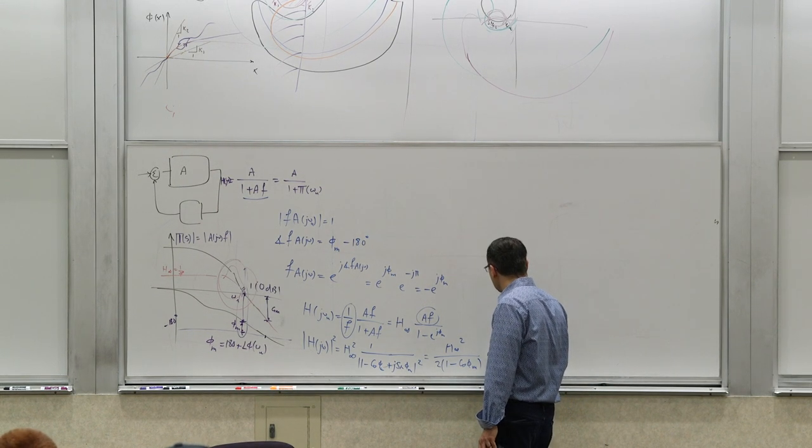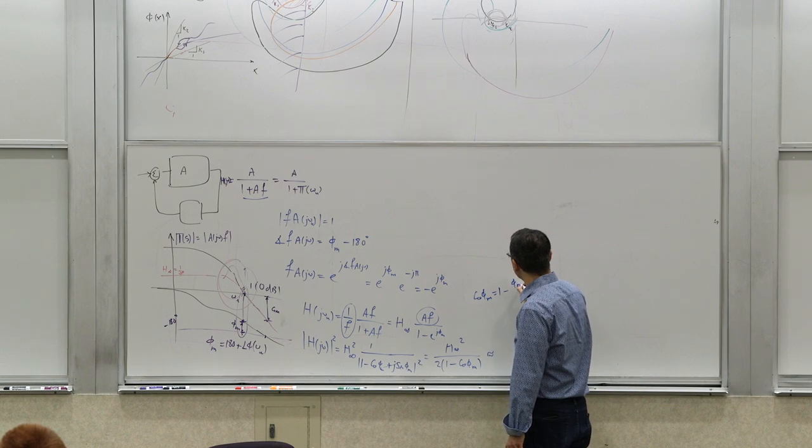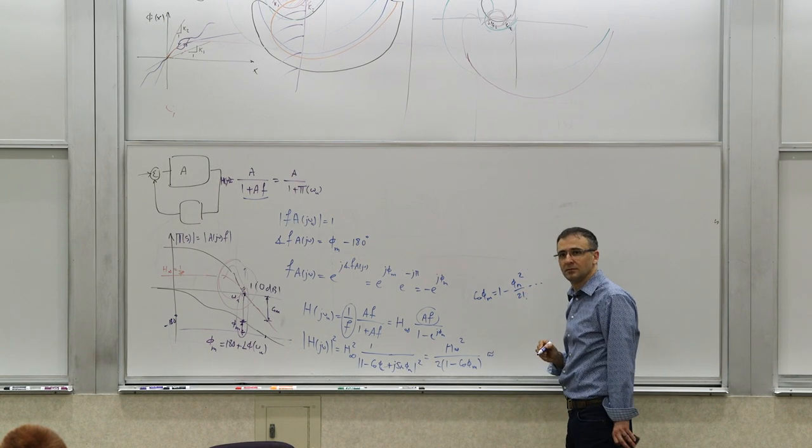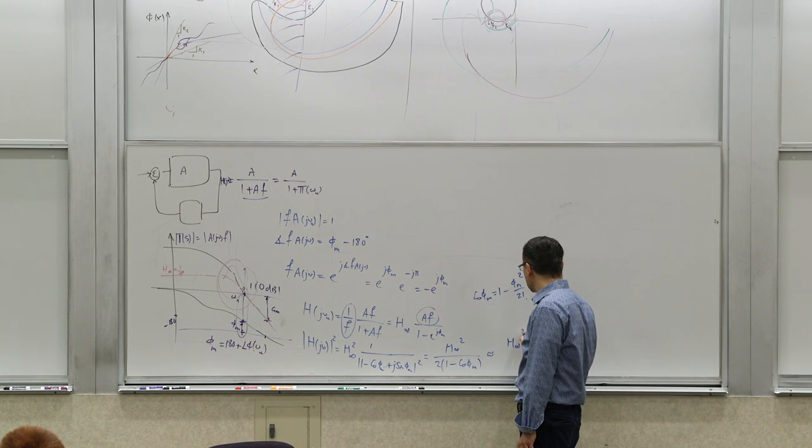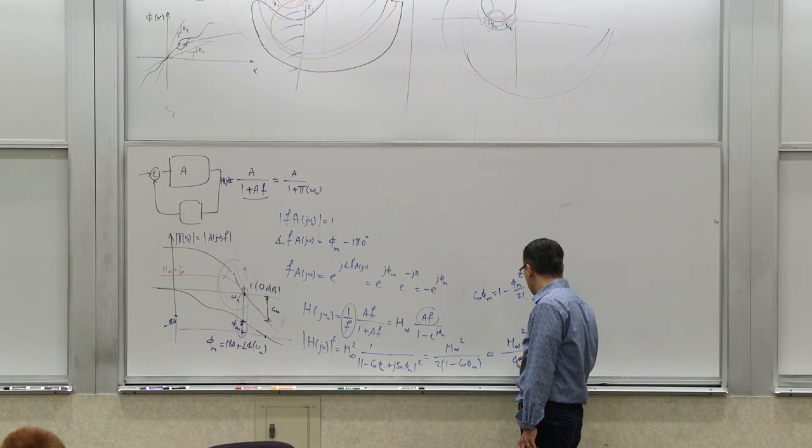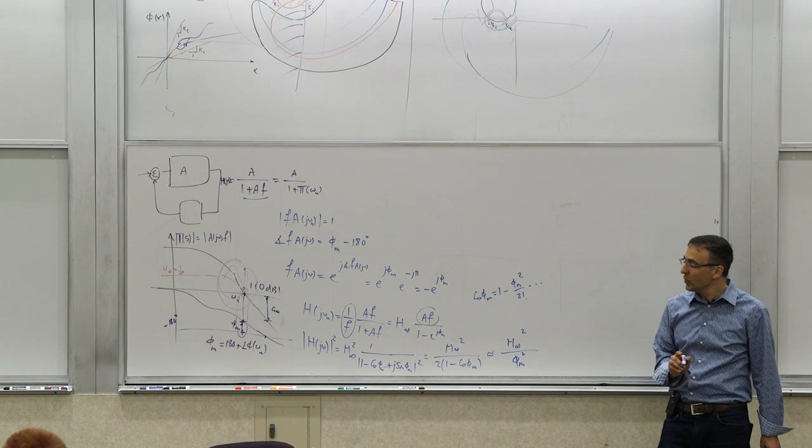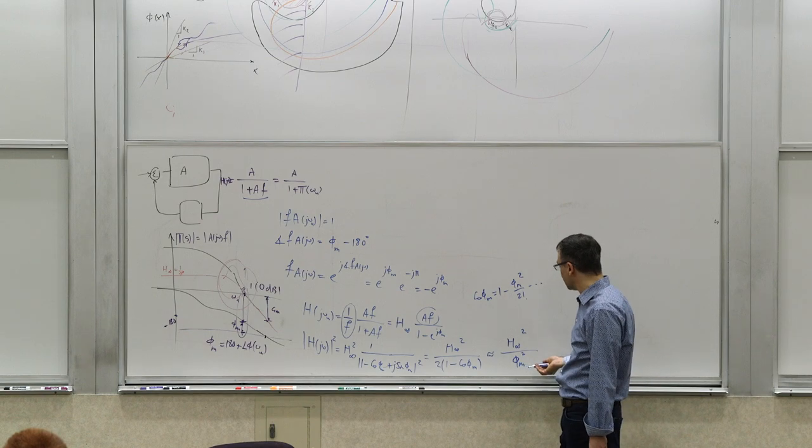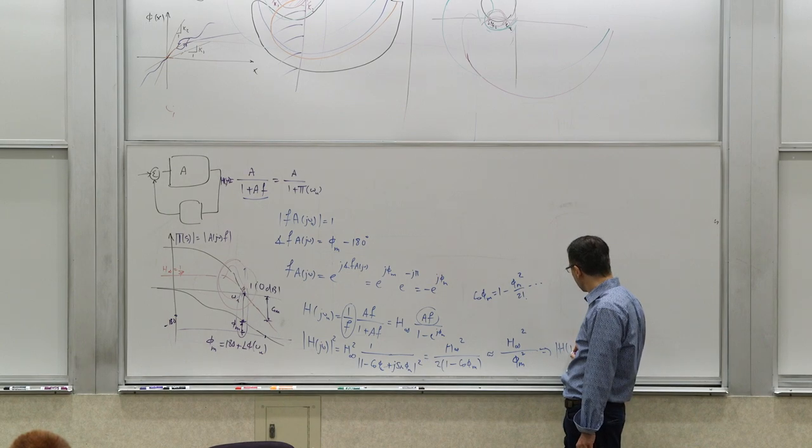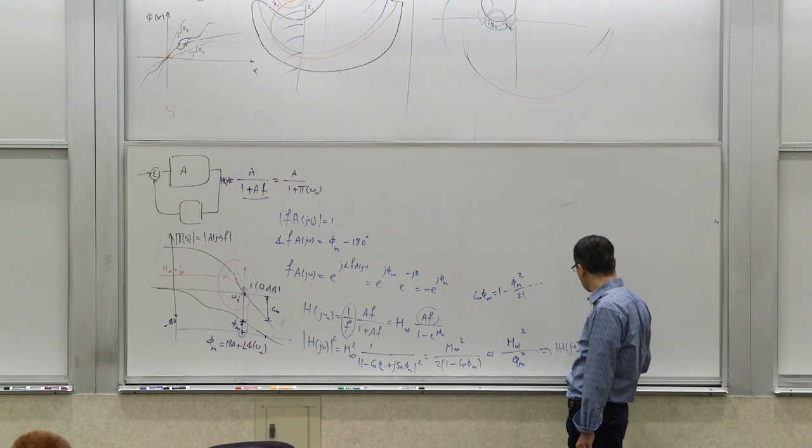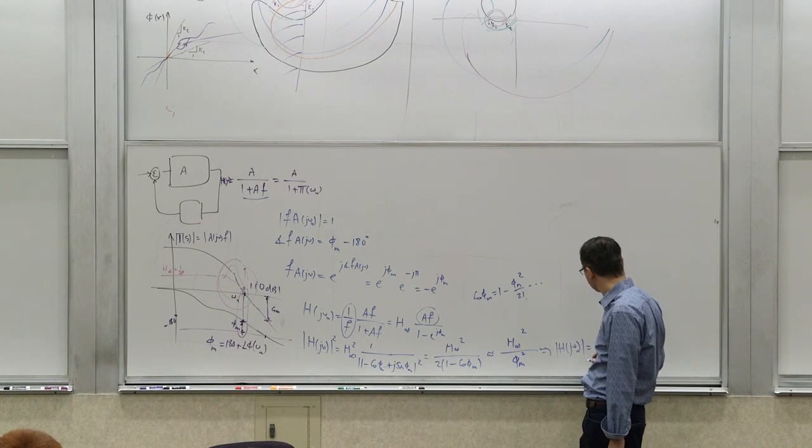And this is approximately, if you write the expansion of the cosine, Taylor series expansion of cosine, it's 1 minus phi m squared over 2 factorial, et cetera, et cetera. So if I keep the first term in the Taylor series expansion, we'll get that this is going to be H infinity divided by phi m squared, approximately. So it says something interesting. And this is really in radians now. It has to be in radians. So it says that the magnitude of H of j omega at the omega unity is going to be the H infinity scaled by 1 over phi m, approximately.